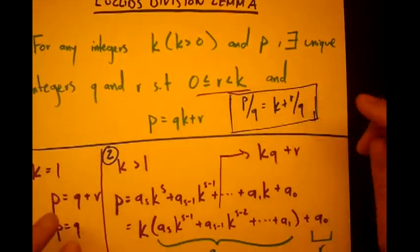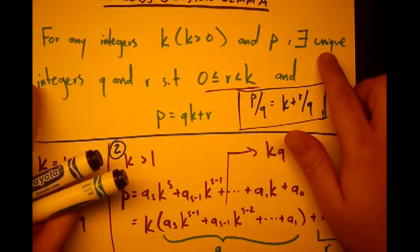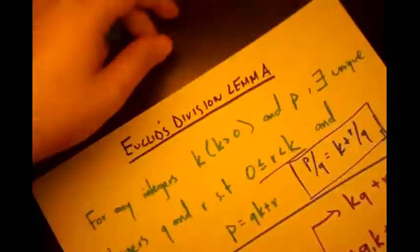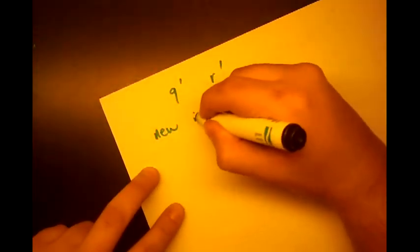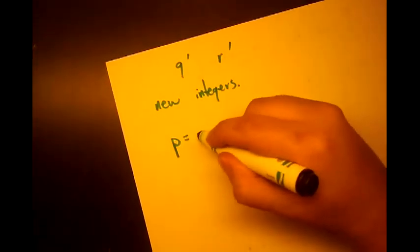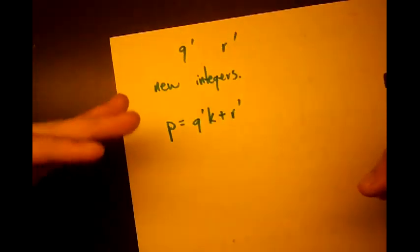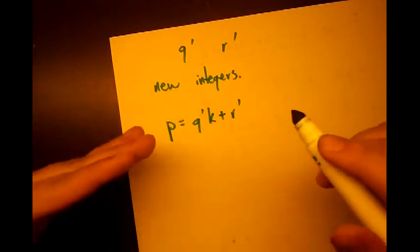Now we're going to go ahead and try, we're going to assume that there's another way. So we're going to use the opposite of this. Since this is unique integers we're going to say that there's another set. So we're going to say this is q prime and r prime, are two new integers, that also satisfy p equals q prime times k plus r prime, just like the other q and r did. So if this is true,